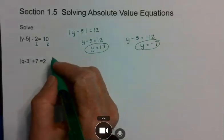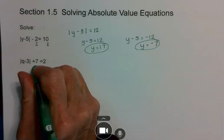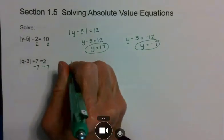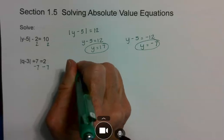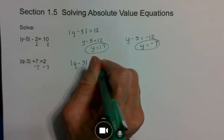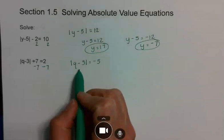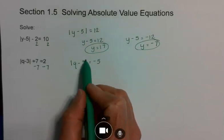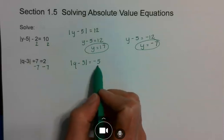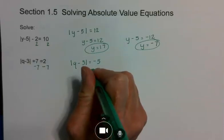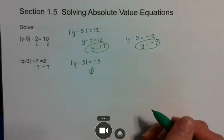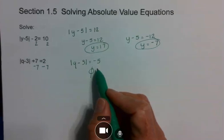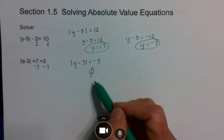Alright, now we're going to solve this problem. It's an absolute value, so I'm going to add the negative 7 first. That's going to give me the absolute value of q minus 3 is equal to negative 5. Notice right here at the start that you cannot do this problem because this is saying I'm taking the absolute value of something and I'm getting a negative 5. So I know right here that my answer is empty set. I can stop my problem now.